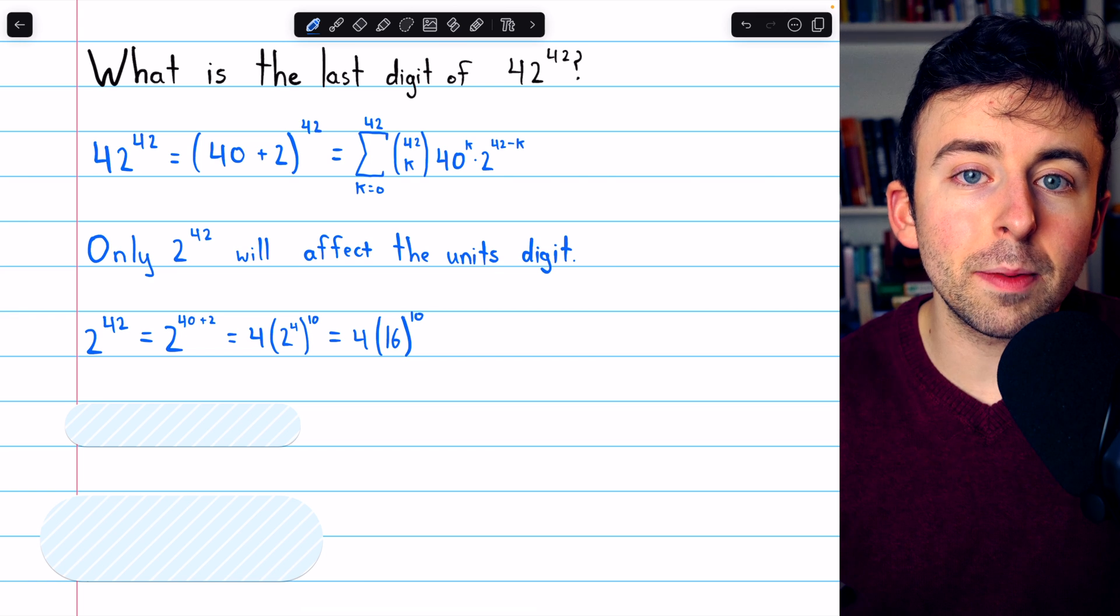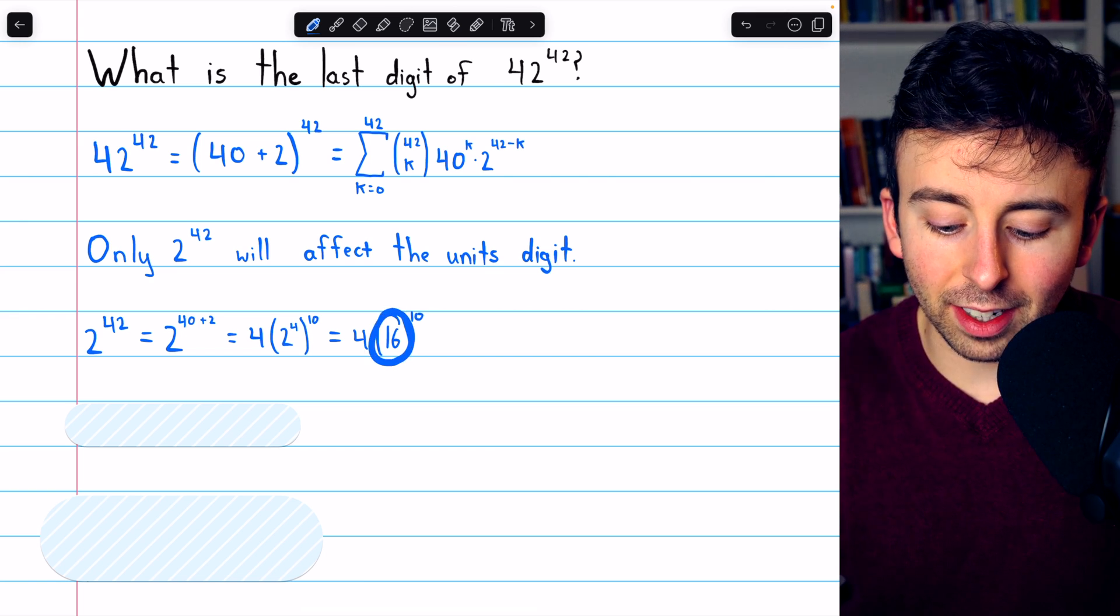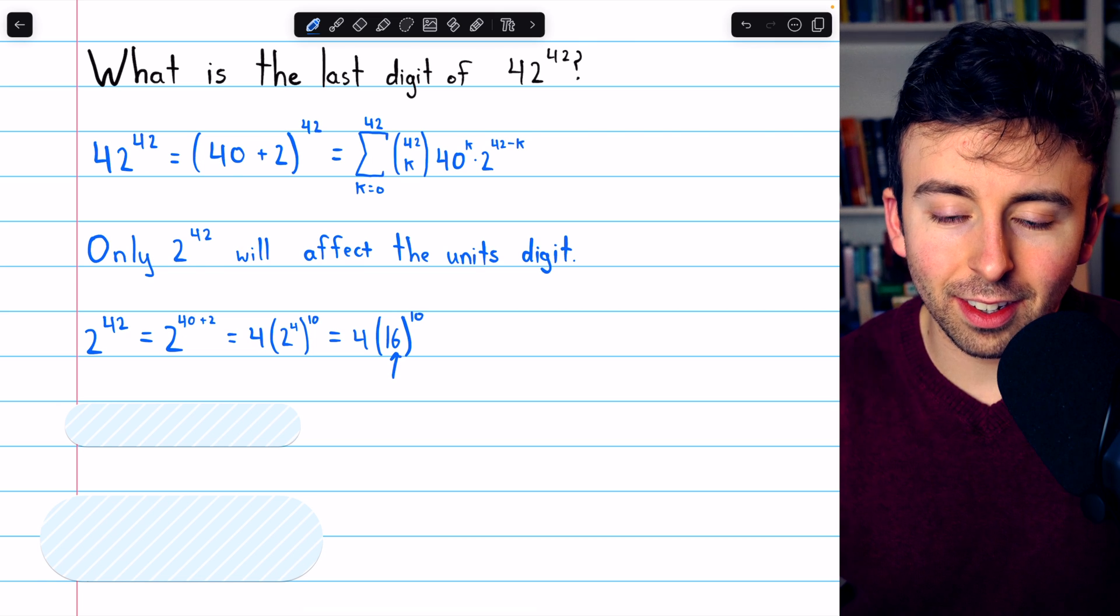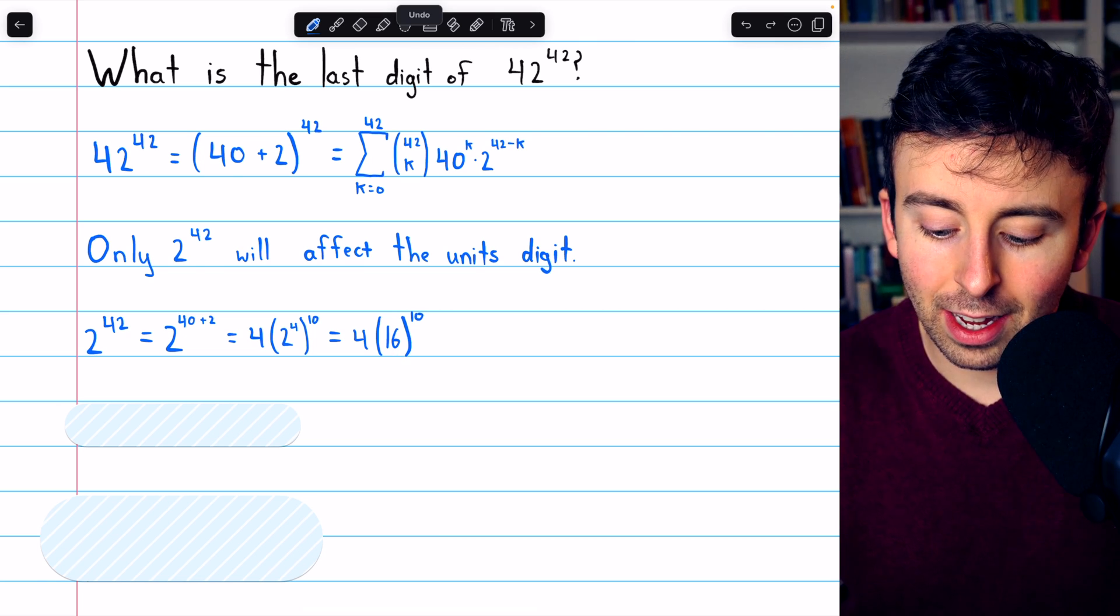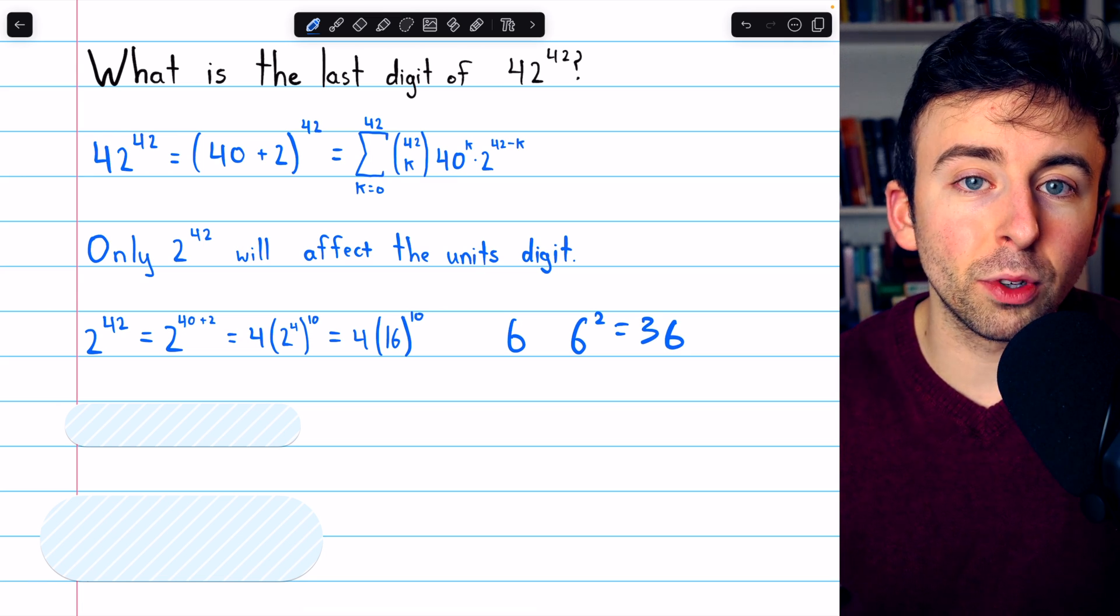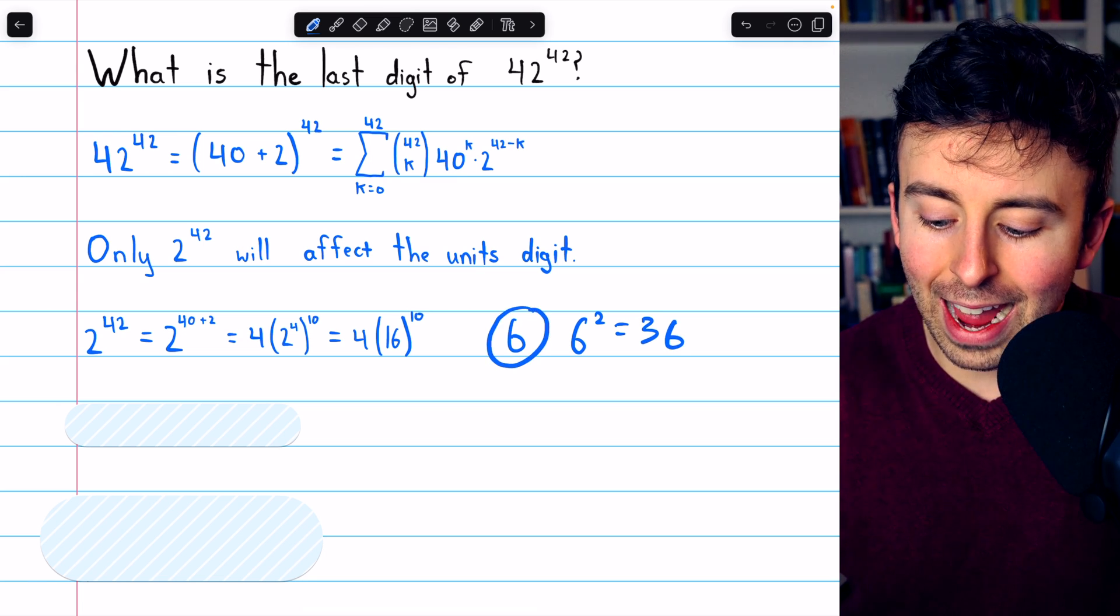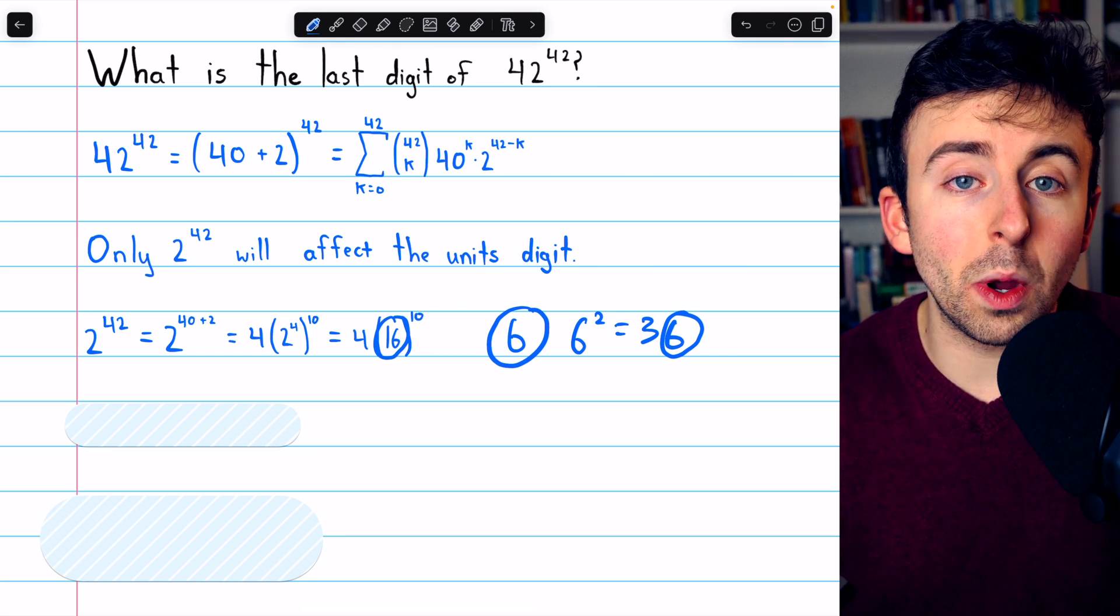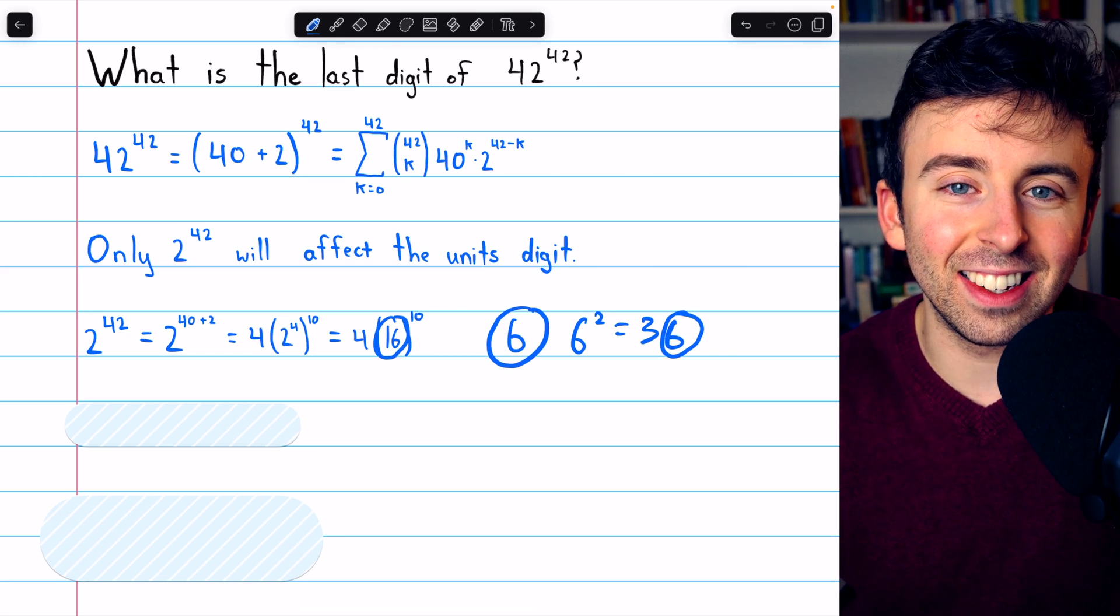And 16 has the same unit's digit no matter what positive integer power you raise it to. This should feel correct intuitively because, of course, when you raise 16 to a power, what affects the unit's digit is this 6, which is in the 1's place. 6 and then 6 squared is 36. You can see how subsequent powers are always going to end in 6. Same thing with 16. And we can do a quick induction proof that that is indeed how it works.